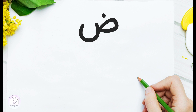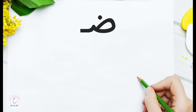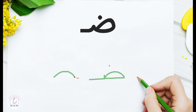In the initial position, Ḍād drops its tail, keeping only the small vertical segment, and we add a connecting segment paving the way for the following letter. Draw the curved line and the straight line, then go up for the small vertical segment and add the connecting segment. Let's see it once more: curved line, straight line, vertical segment.